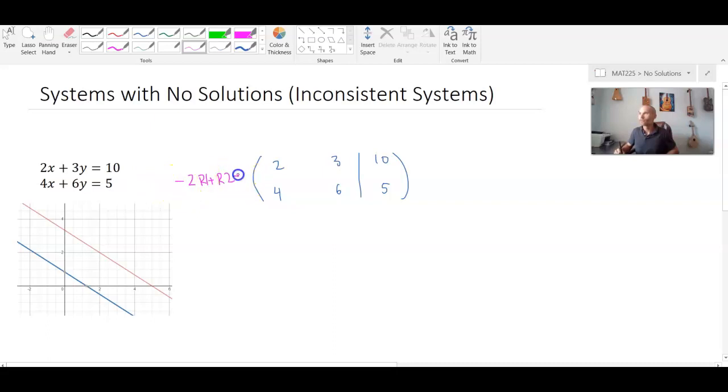Then you'll see that what we end up with is 2, 3, 10 for the first equation. Negative 2 times 2 plus 4 is 0. Negative 2 times 3 plus 6 is 0. Negative 2 times 10 is negative 20 plus 5 is negative 15.